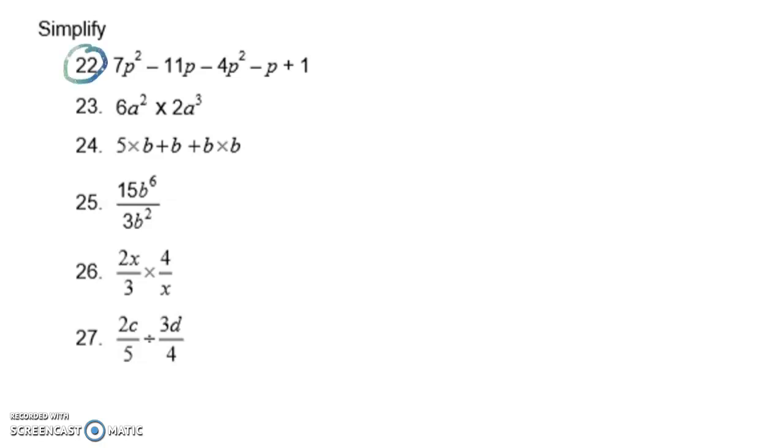In question 22 we have to simplify and the big idea here is like terms. That's because I'm looking at adding and subtracting different terms. If the letters match up they can go together. So the 7p² goes with the -4p², the -11p goes with -p, and then we've got this leftover 1 sitting on the end. So my answer for this one will be 3p² - 12p + 1.